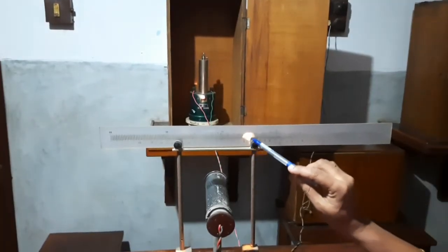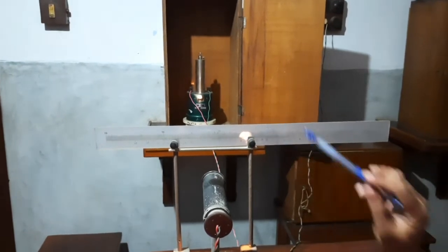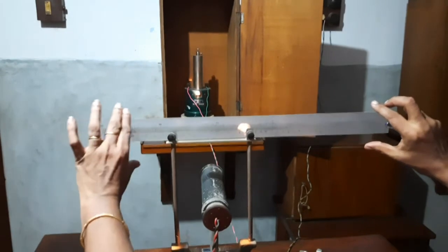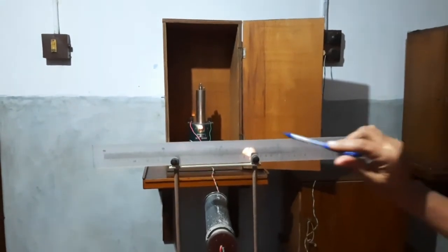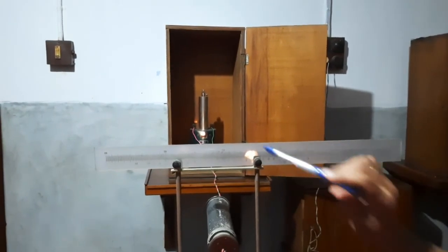The cross wire of the lamp is seen on the scale as a light. Initially, the scale is adjusted in such a way that the cross wire is made to fall on the reading zero.